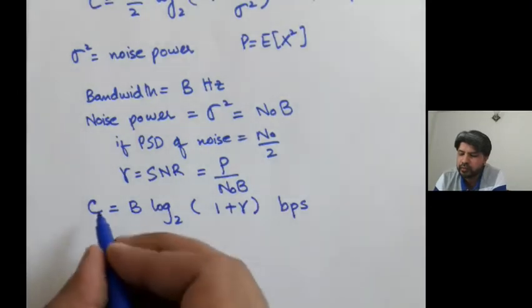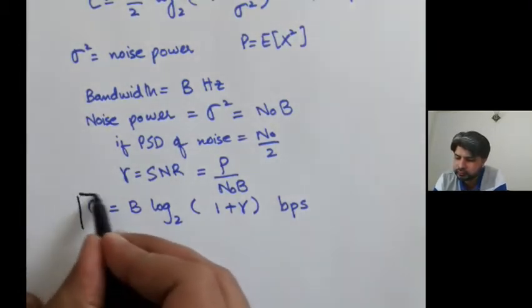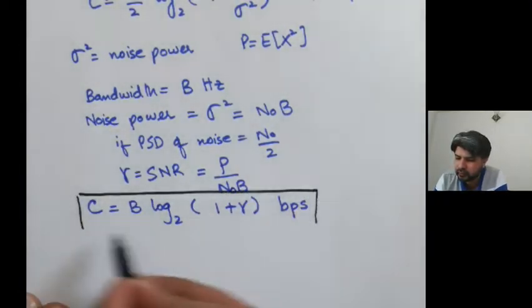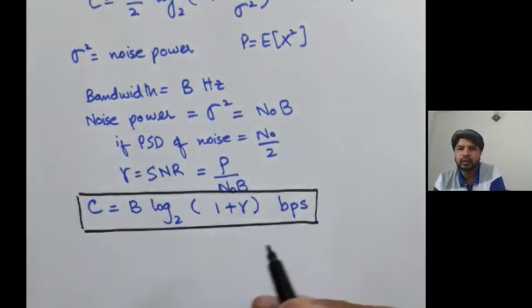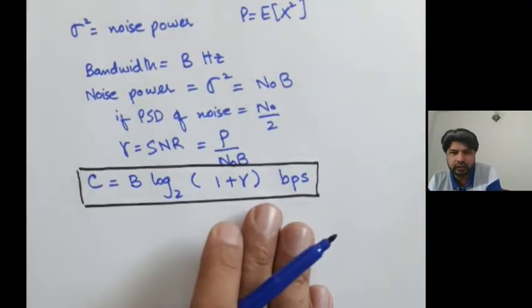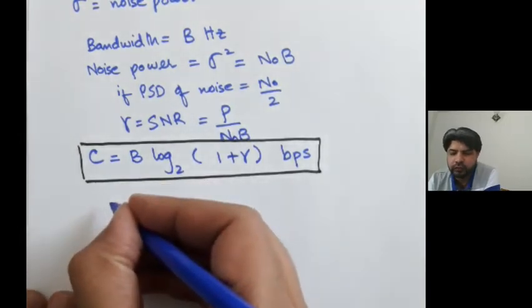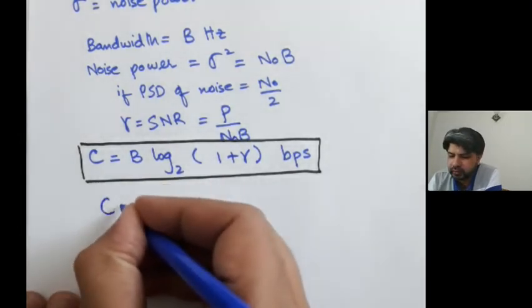And this Shannon's capacity formula was derived using information theoretical concepts. And Shannon proved in his 1948 that this capacity is nothing but the maximum information between X and Y.